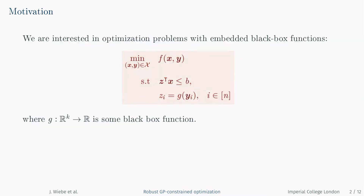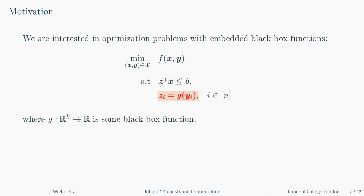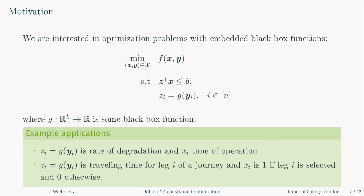The type of problem we are looking at has some objective function f and some feasible region x. We also have at least one constraint which contains a linear combination of a parameter vector z. These parameters depend on a set of decision variables yi through a black box function g. One example is equipment degradation, where the parameters z are the rate of degradation and xi is the time for which a piece of equipment is operated. The total degradation is the sum of degradation in each time period i and should be smaller than some upper value b.